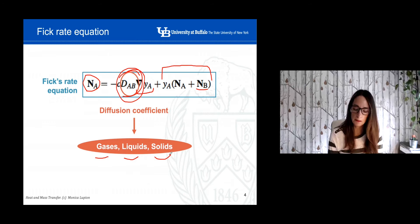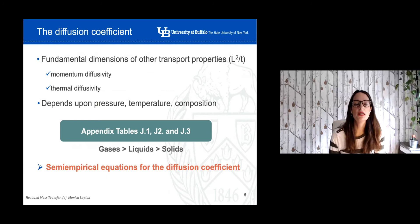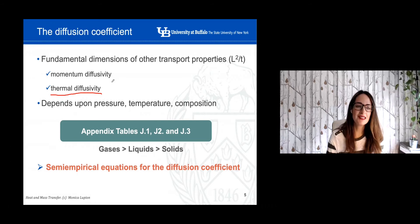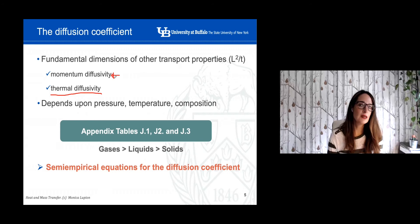So what is the diffusion coefficient? The diffusion coefficient is a fundamental dimension. Unlike other fundamental dimensions in transfer properties, the units are usually length squared over time. When we studied heat transfer, we defined thermal diffusivity, which was an important part of the governing equation. In transport transfer you also studied momentum diffusivity. This diffusion coefficient is a fundamental dimension similar to those used in momentum and heat transfer. It depends on pressure, temperature, and composition.